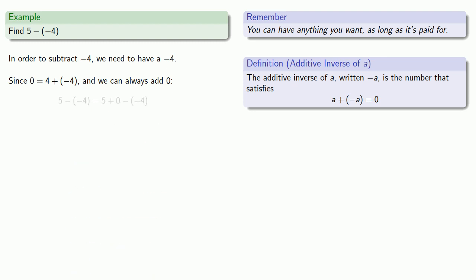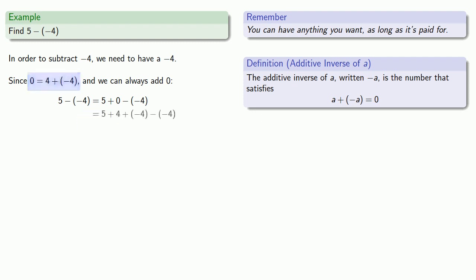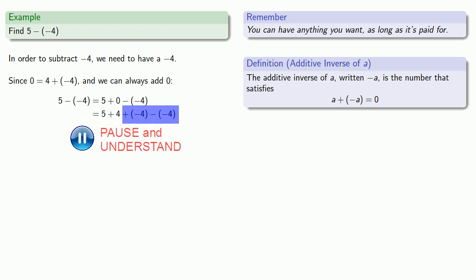So 5 minus the additive inverse of 4 is the same as 5 plus 0 minus the additive inverse of 4. Now 0 is the same thing as 4 plus the additive inverse of 4, so we can replace it. At the end, we are adding the additive inverse of 4 and then immediately taking it away, so that last bit just drops out. And so we have 5 plus 4, which is equal to 9.